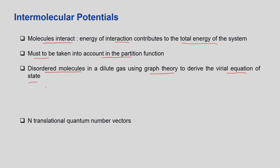For the Virial equation of state we need certain assumptions about the atoms. If we are talking about n number of atoms, they can be specified by a collection of vectors. We need both spatial vectors — the coordinates of each atom r1, r2, up to rn — where each r contains x, y, and z coordinates.